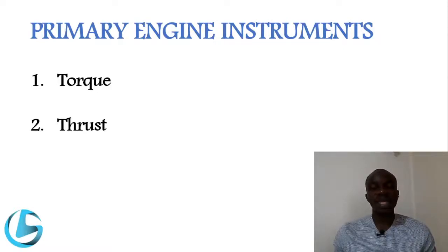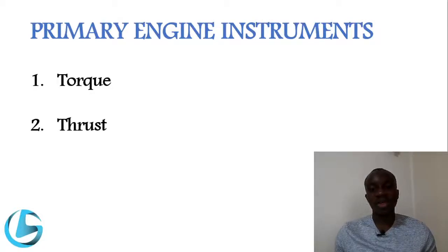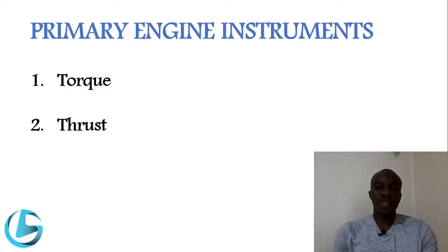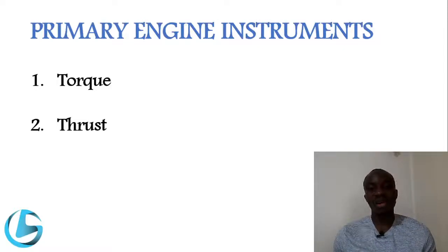Another primary engine instrument is the EGT, or Exhaust Gas Temperature, also called ITT or TIT — Inter Turbine Temperature or Turbine Inlet Temperature. This shows us the average temperature of the exhaust gases, measured just after the engine turbine. This is a very crucial indicator, given in degrees centigrade. It shows us that the engine is operating within the required temperature and that the temperature limit is not being exceeded.